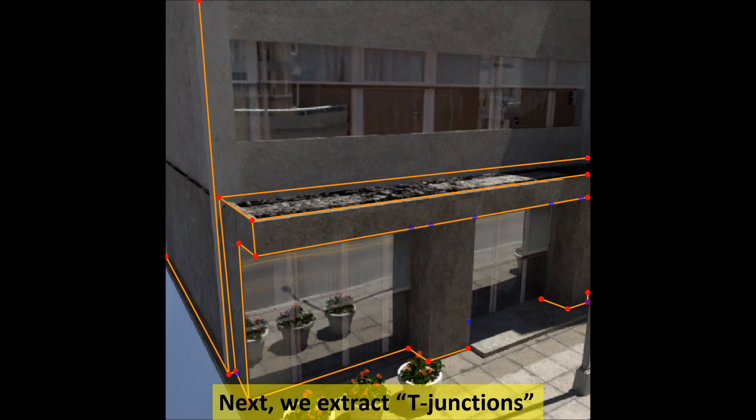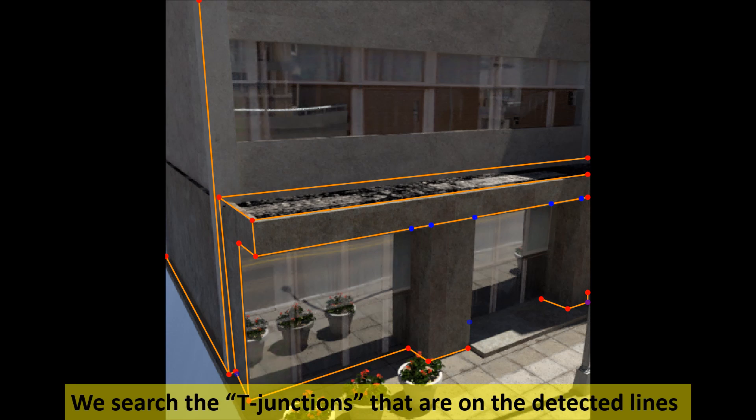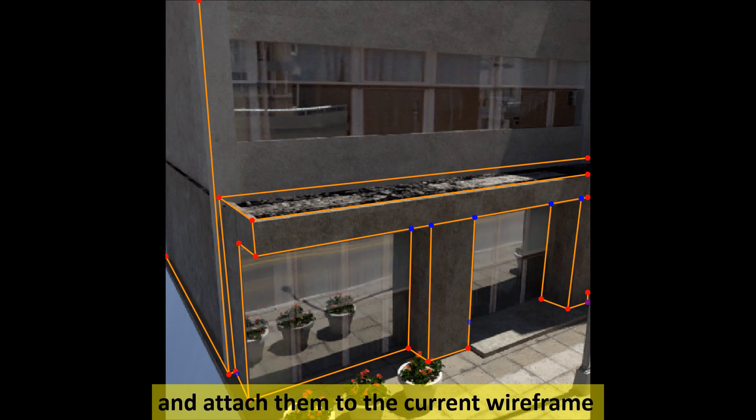Next, we extract T junctions candidates, the junctions that are generated by occlusion of foreground objects. We search the T junctions that are on the detected lines and attach them to the current wireframe. This process is repeated multiple times until the whole wireframe is reconstructed.